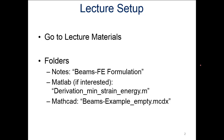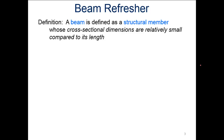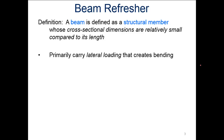So a quick beam refresher: beams are defined as a structural member whose cross-sectional dimensions are relatively small compared to its length — really long compared to the cross-sectional area. They primarily carry lateral loading that creates bending. So we're mainly looking at that lateral loading creating the bending, and shear is typically ignored.